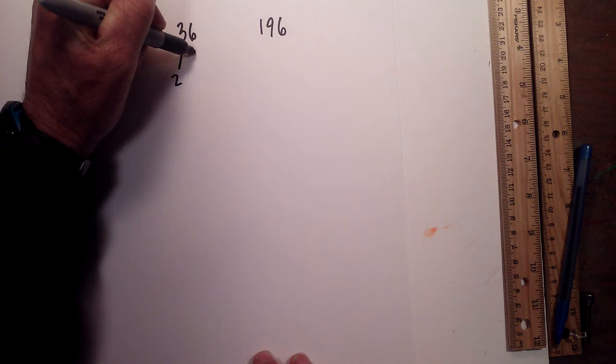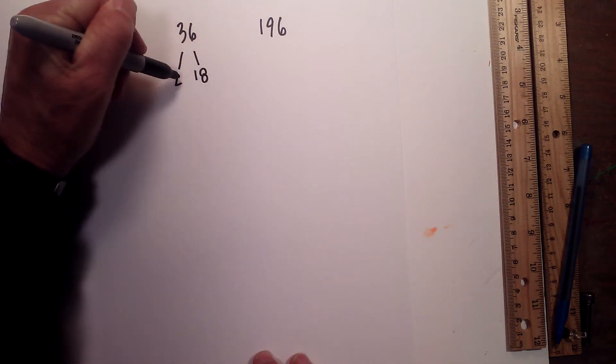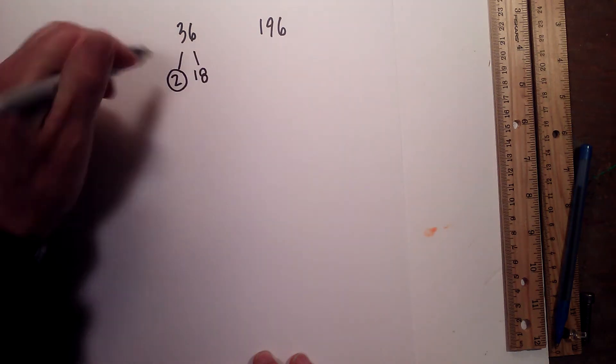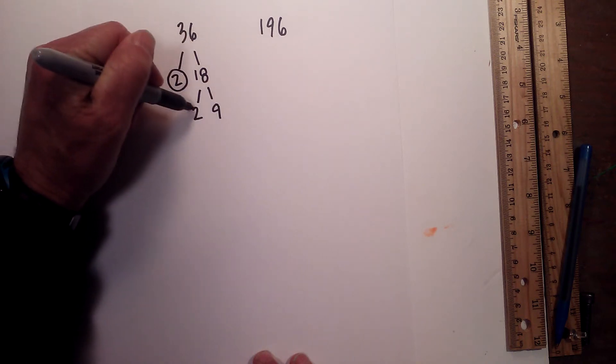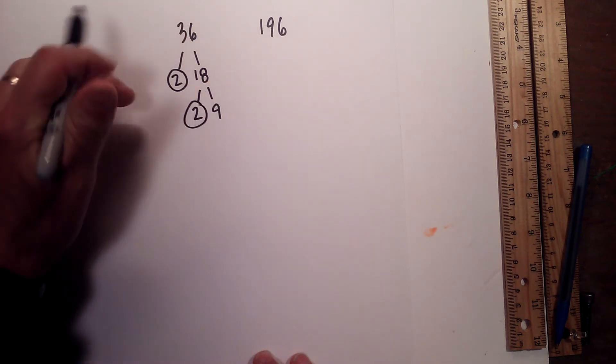First we'll begin with 2 times 18 equals 36. Circle the 2 because it is prime. Now 2 times 9 equals 18. Circle the 2 because it is prime.